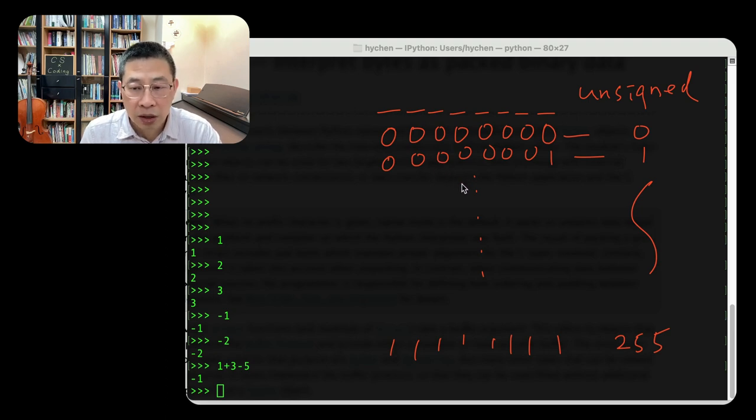But if we do this, we cannot represent negative numbers. So how do computers represent negative numbers or the sign part of the data for the positive number and for the negative number?